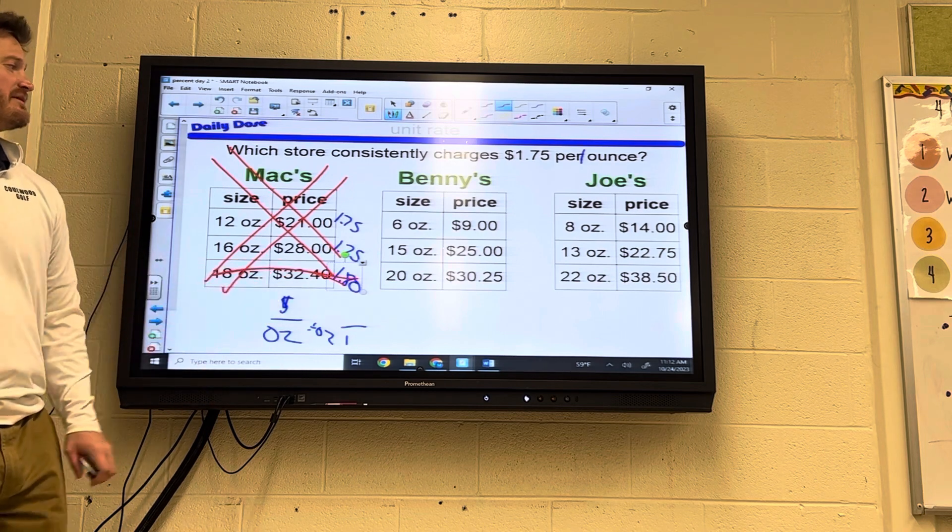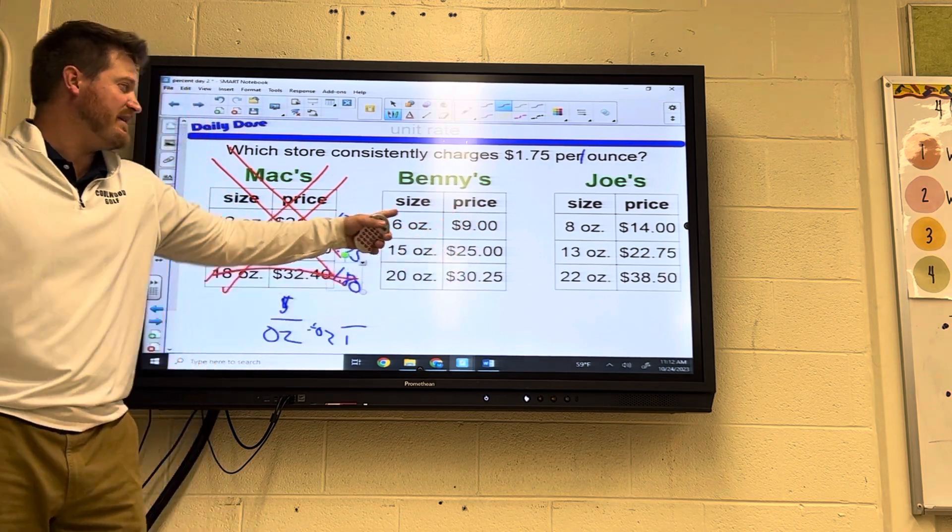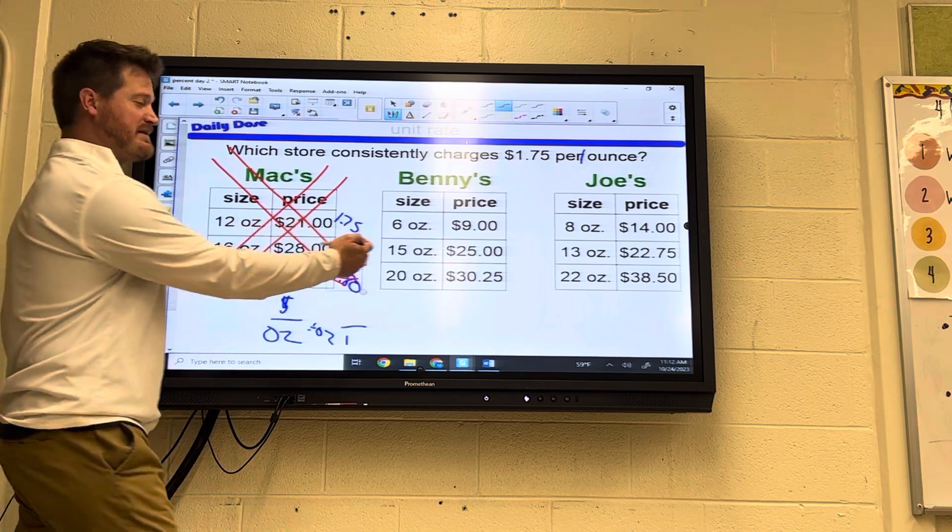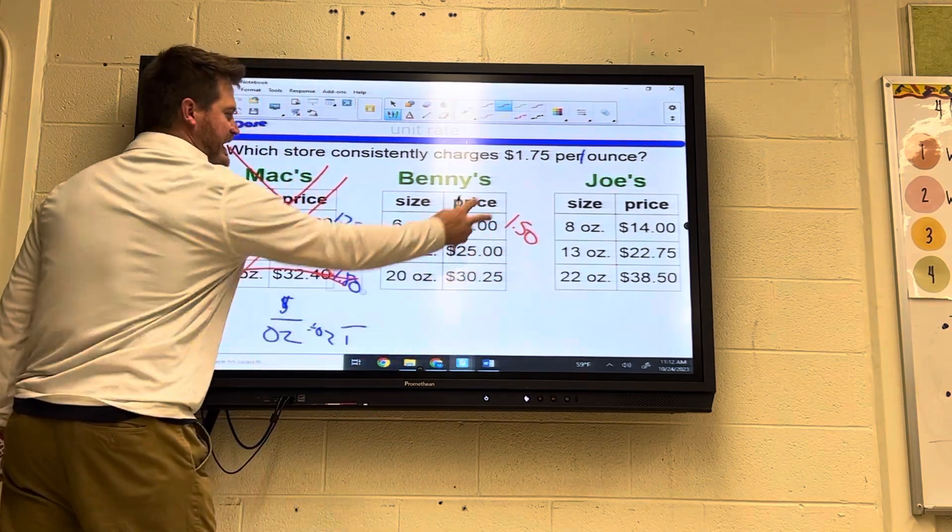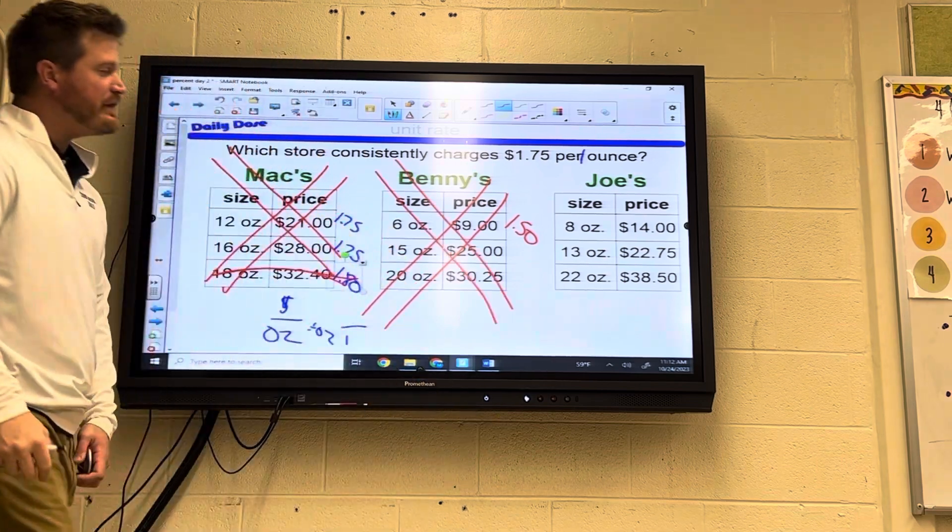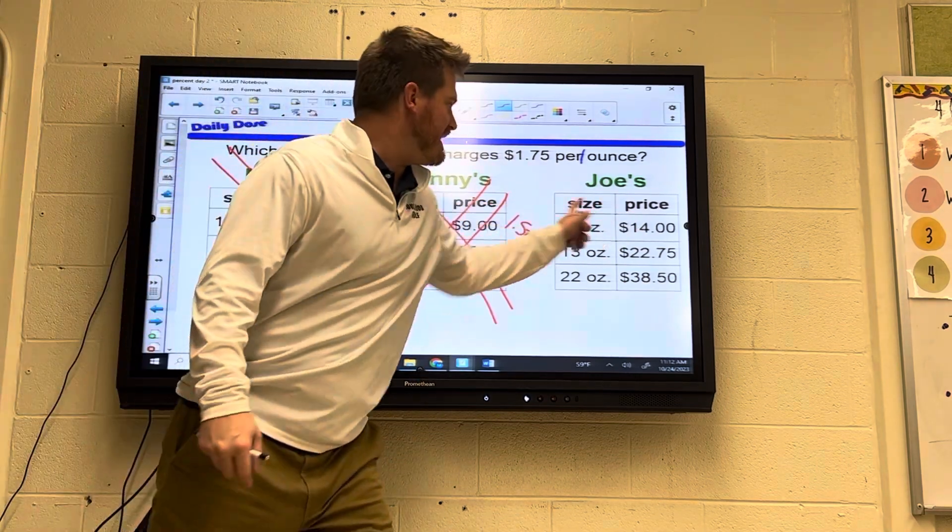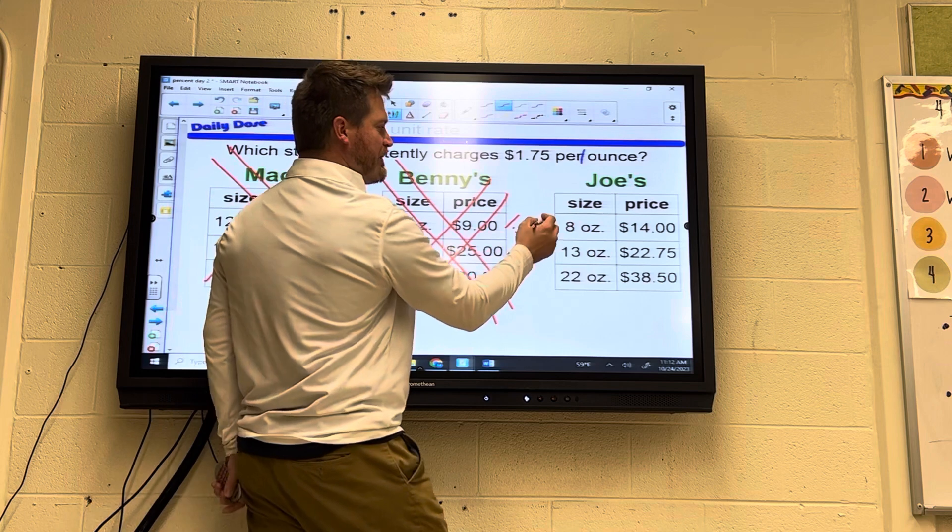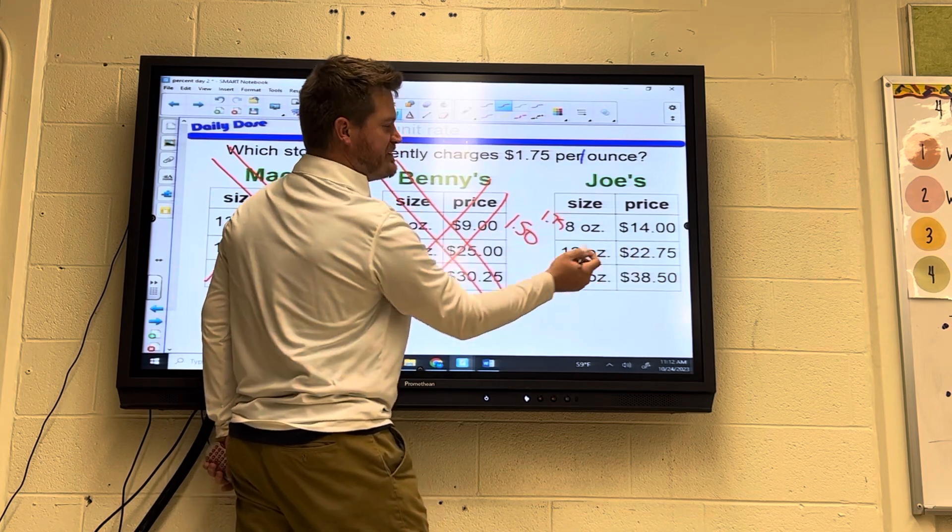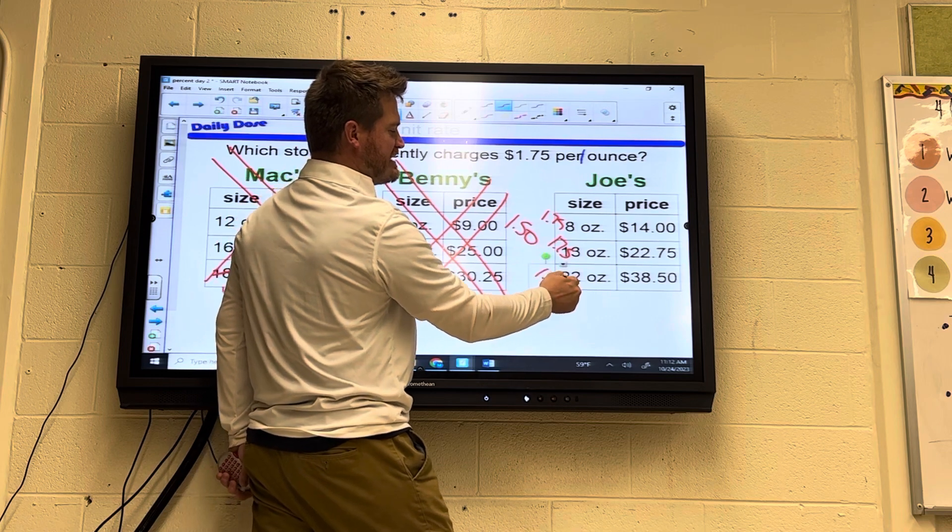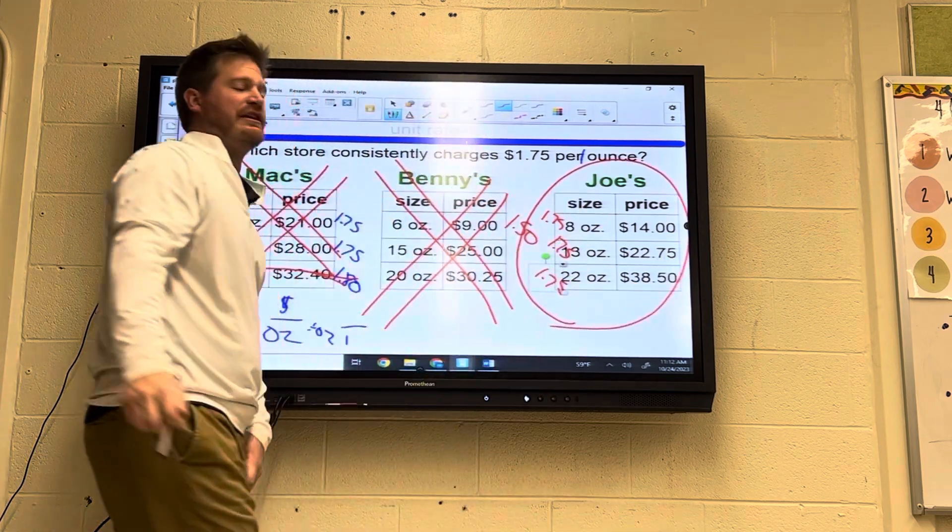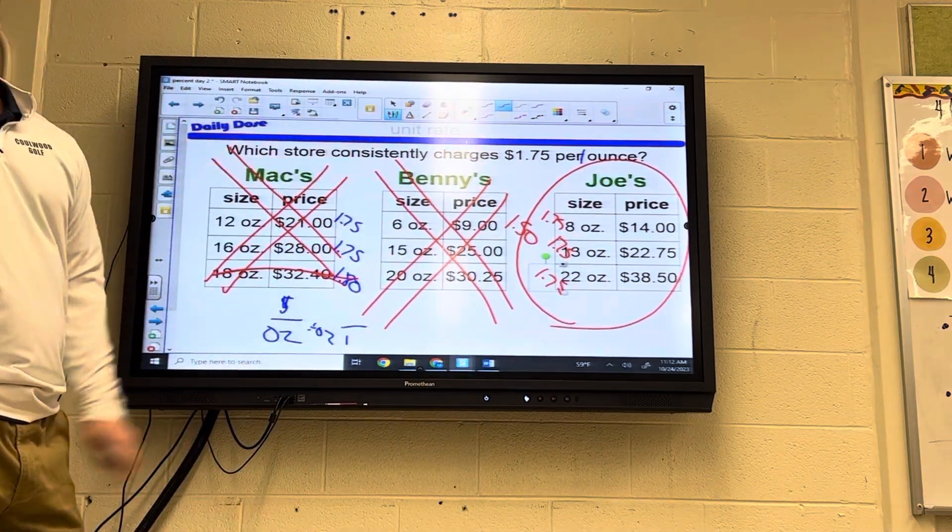Let's look at Benny's. Well, Benny's off the get-go. Cost divided by size. The dollar amount divided by ounces. Nine divided by six was already 1.5, which is $1.50. That's already out. So hopefully, Joe's is right. If you divide each, 14 divided by 8 is $1.75. 22.75 divided by 13, 1.75. Last but not least, 1.75. They all are a unit rate of 1.75. Joe's is your answer.